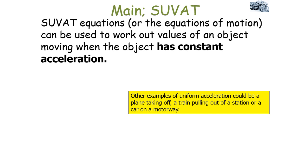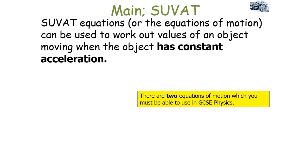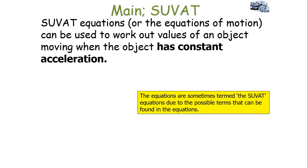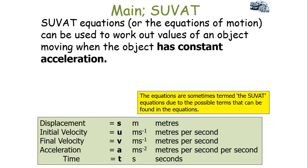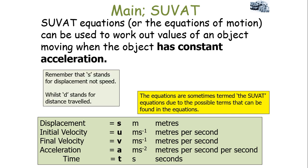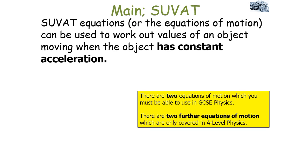In all of these examples, to achieve uniform acceleration we need our resultant force to be constant. There are two equations of motion you need to use in GCSE physics, and two further equations covered at A level. These equations are sometimes termed the SUVAT equations due to the possible terms S, U, V, A and T. Remember, S stands for displacement in the SUVAT equations, not speed — D is for distance travelled.